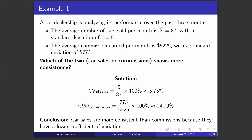Let's look at an example on calculating the coefficient of variation. A car dealership is analyzing its performance over the past three months. The average number of cars sold per month is x-bar equals 87 with a standard deviation of s equals 5. The average commission earned per month is $5,225 with a standard deviation of $773.